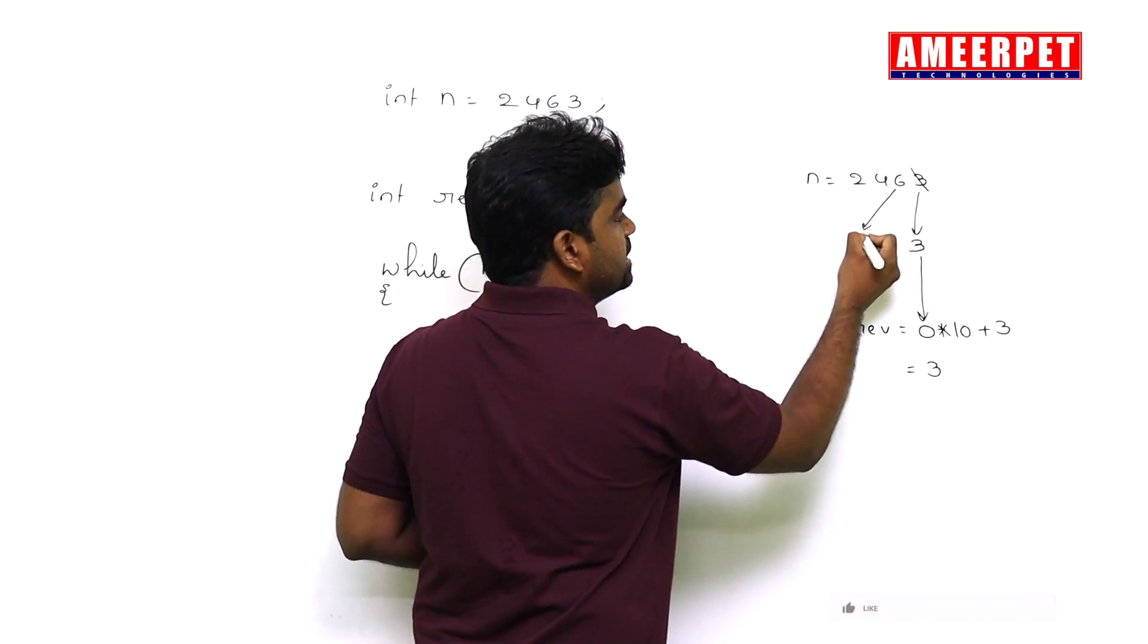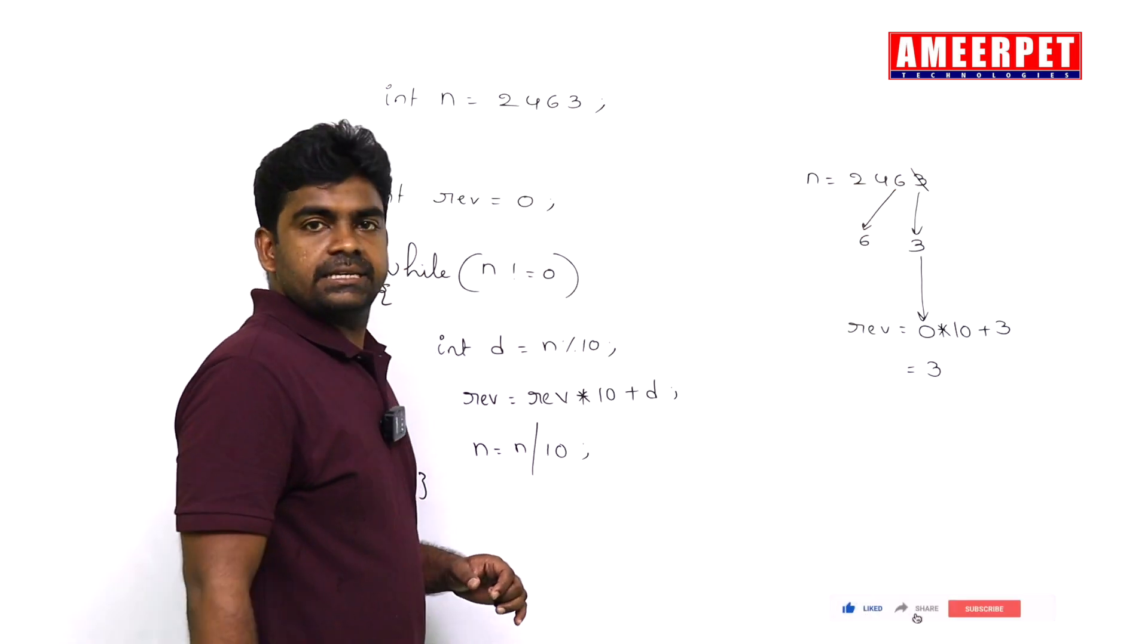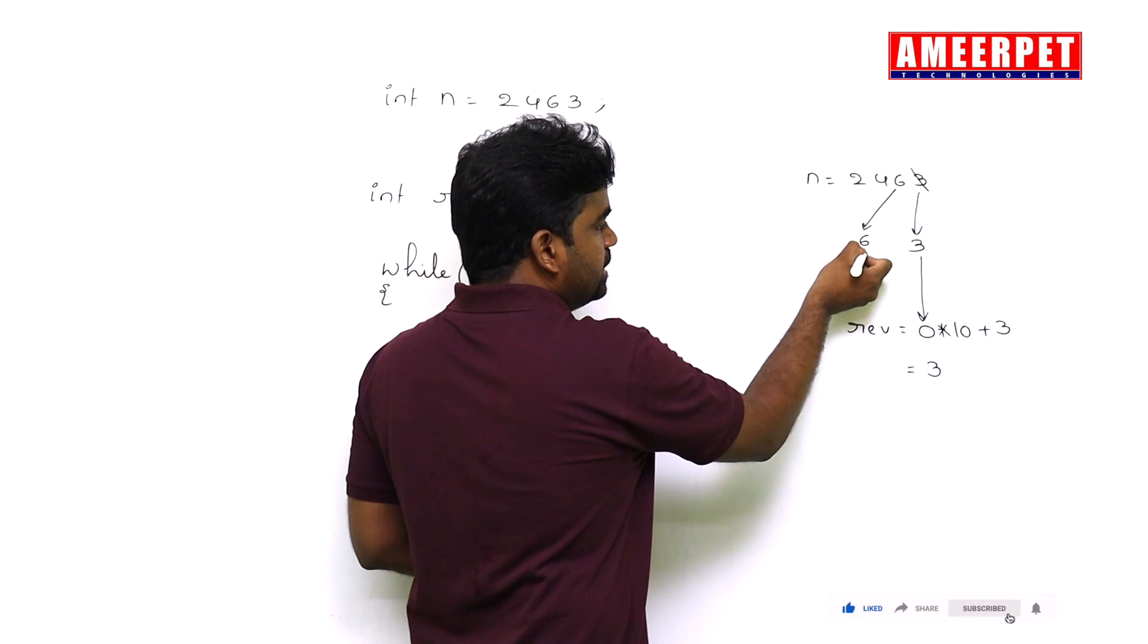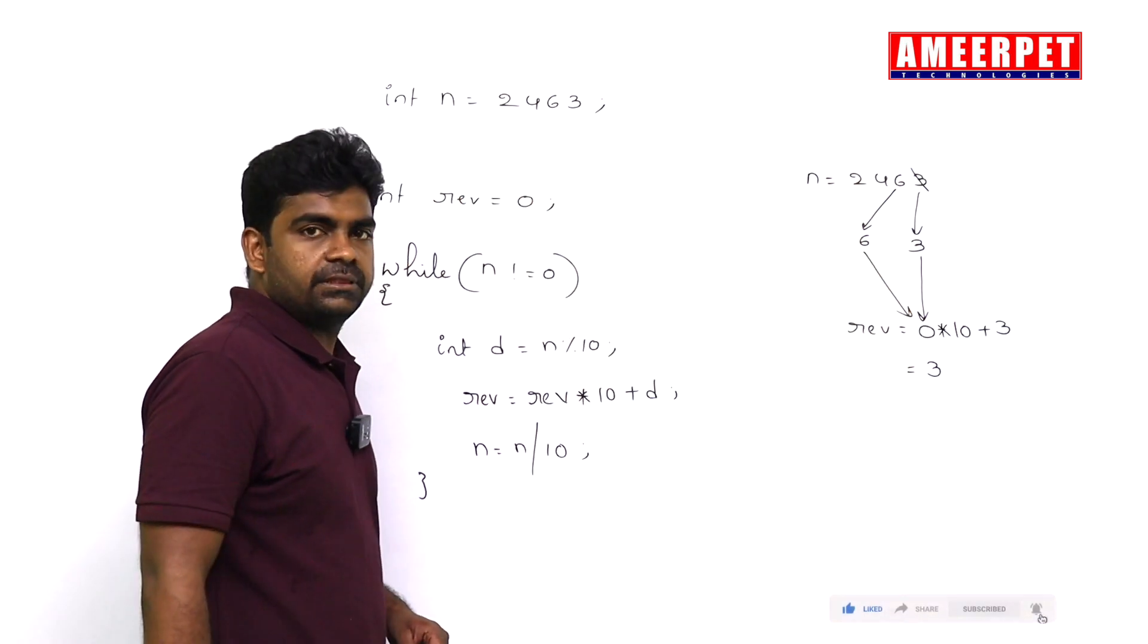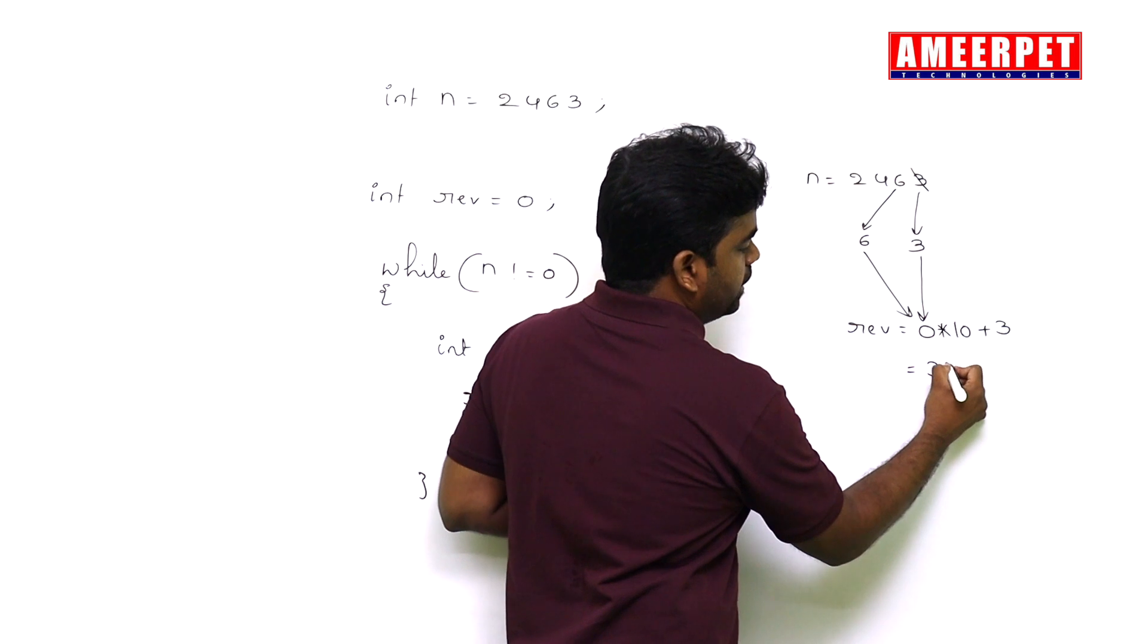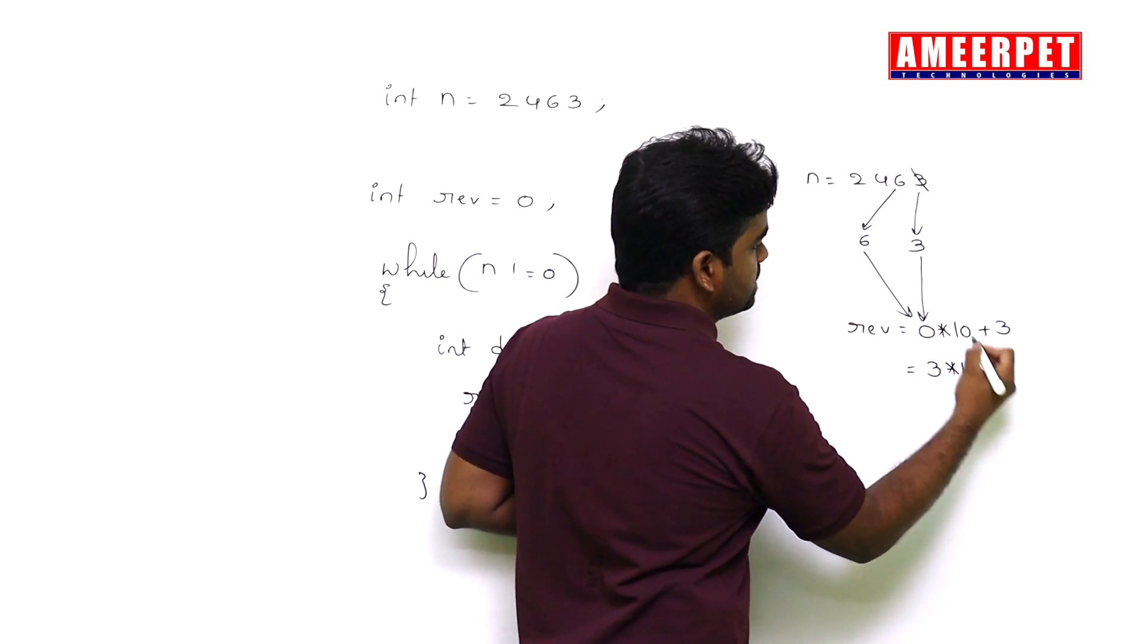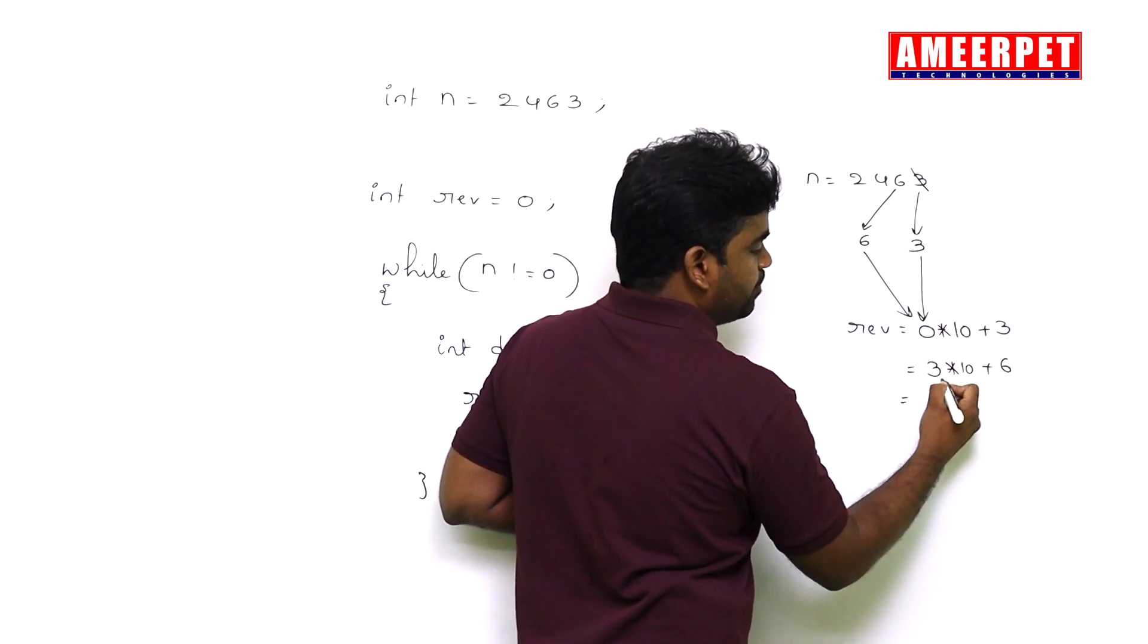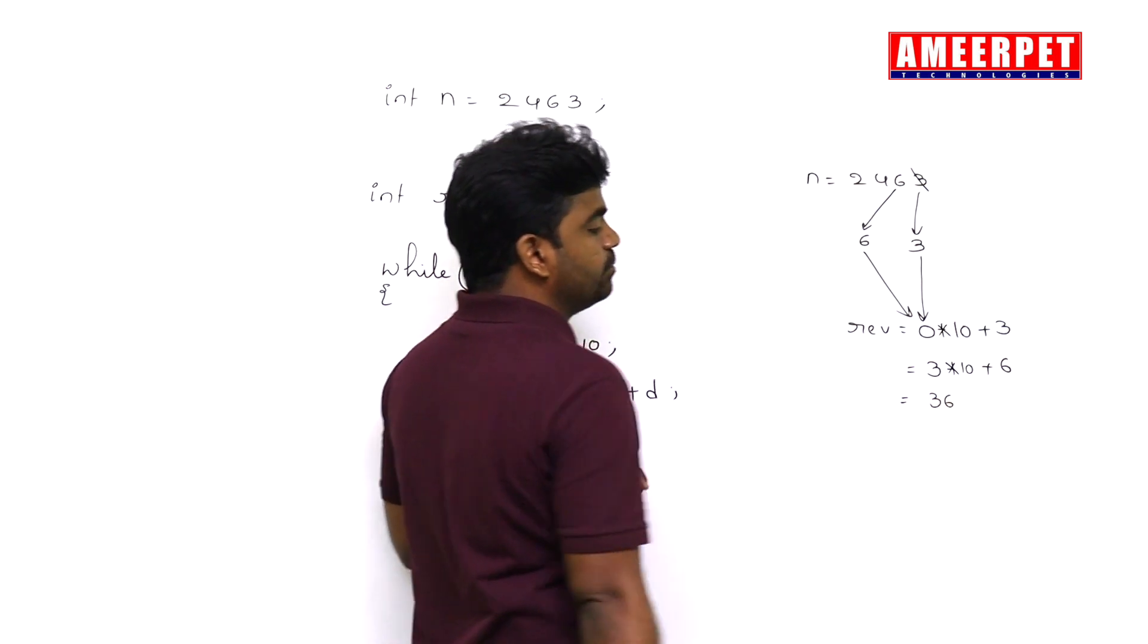So what is that next one? It is 6. 6 will come now here. 6 we are performing the same operation with this. So 3 into 10 plus the digit is 6, 30 plus 6 value become 36.